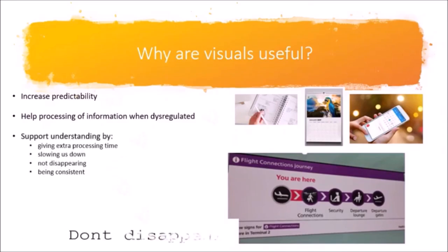Using visuals is really important to support learners who have language difficulties for many reasons. By using visuals, we allow the young person extra time to process and understand a message. When we are using visuals, we also tend to slow our speech down. Visuals don't disappear, unlike our words — so if the young person doesn't understand what we say the first time, they can go back, look at the visual and process the information at their own pace. Another reason is that visuals are consistent, unlike our words.